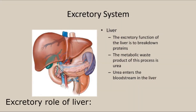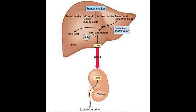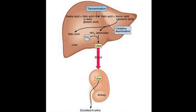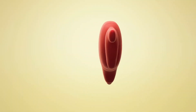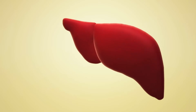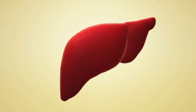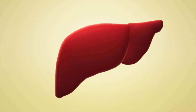Excretory role of liver: Breakdown of amino acids in the liver produces urea. Urea is then carried to the kidneys, from where it is excreted out in the urine. The liver also helps in the elimination of bile pigments, extra vitamins and many drugs which accumulate there.